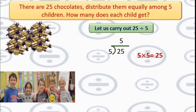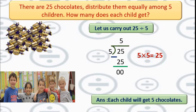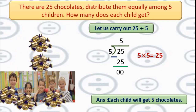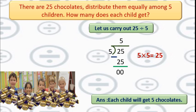I will write 5 up as a quotient and 25 below. Subtracting gives 0. So each child will get 5 chocolates, because 5 fives are 25 and total 25 chocolates are there among 5 children. Distributing: 5 to this girl, 5 to this boy, again 5, this 5, and last 5 to the last boy. Each child got 5 chocolates.